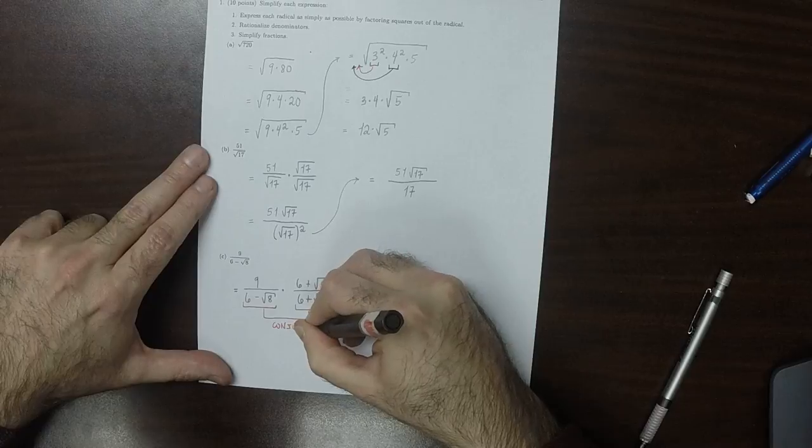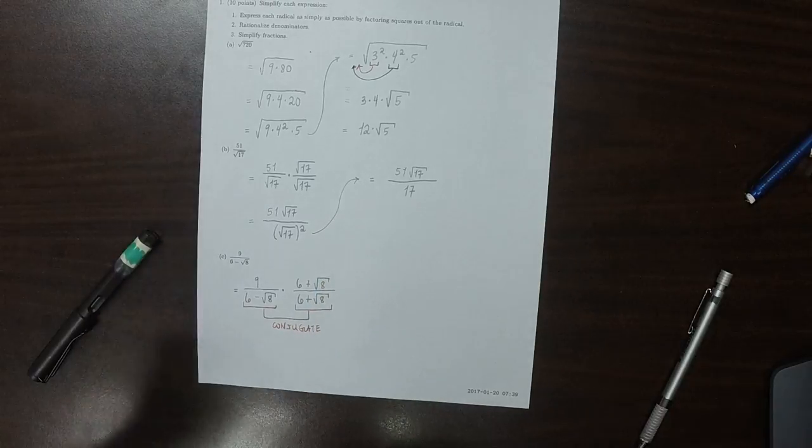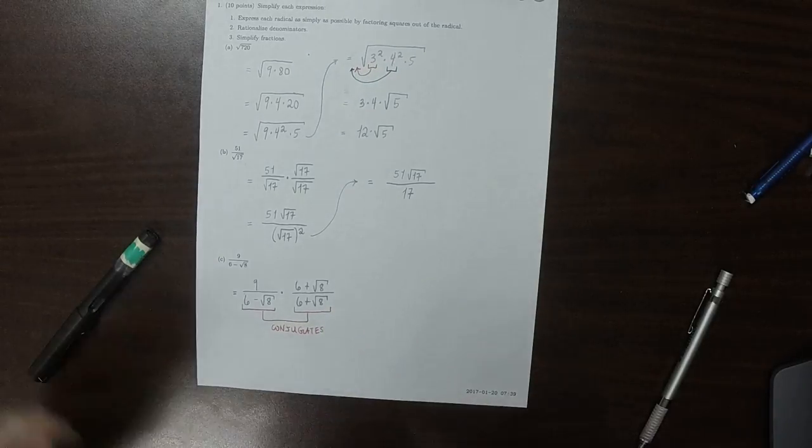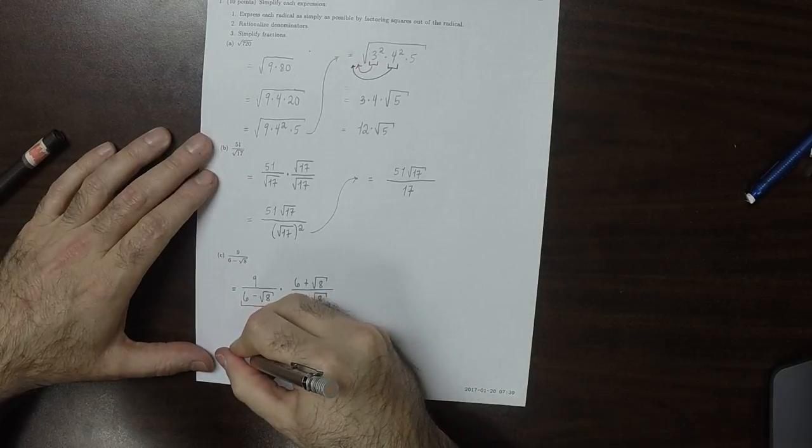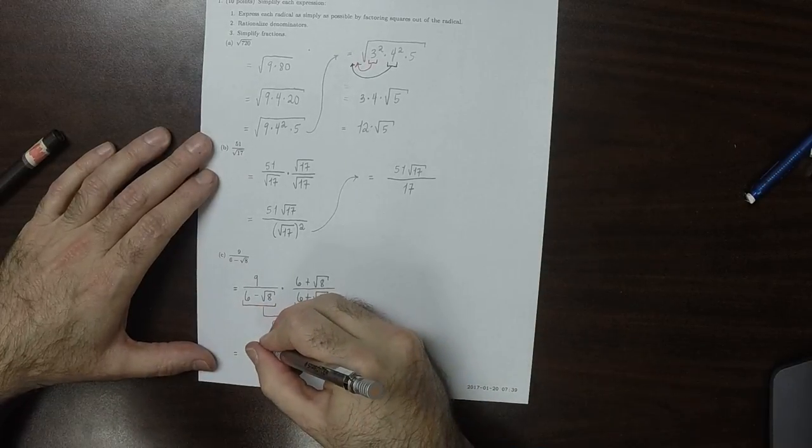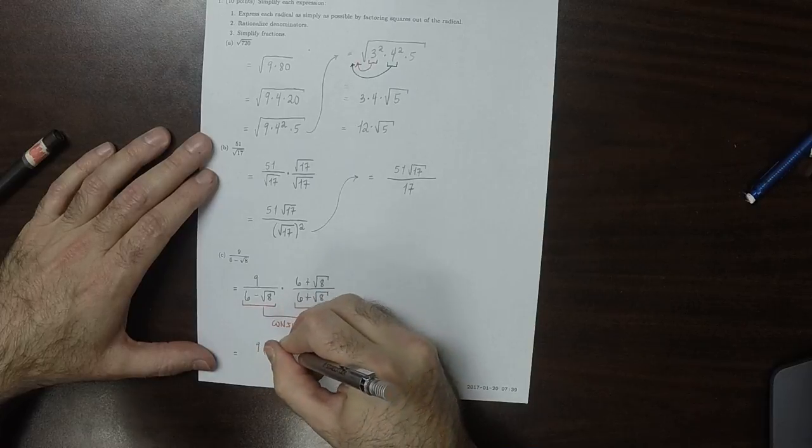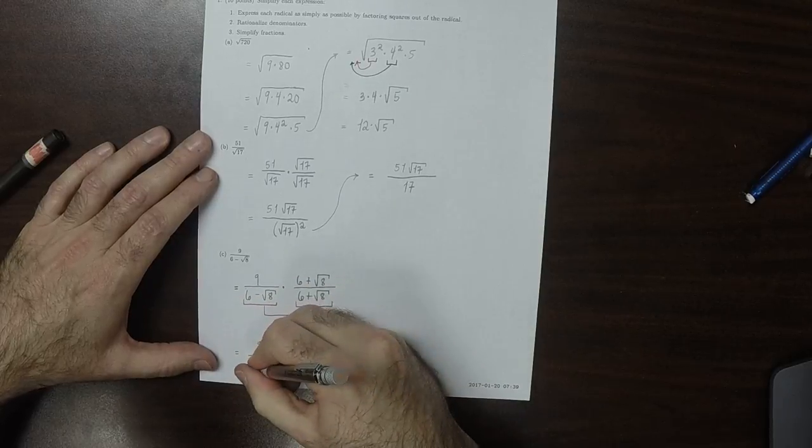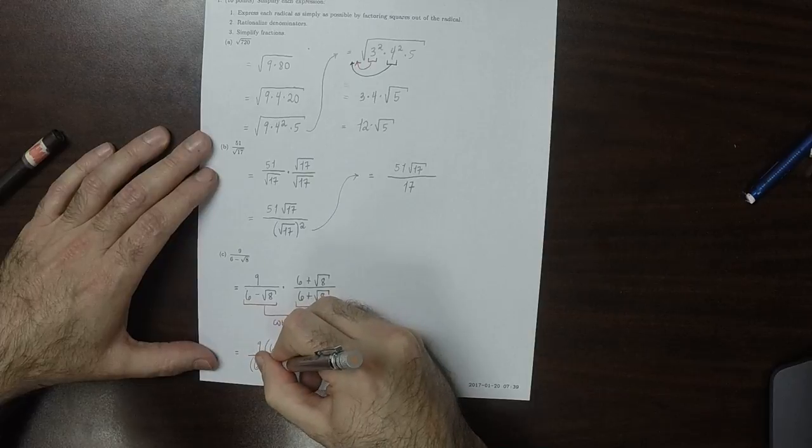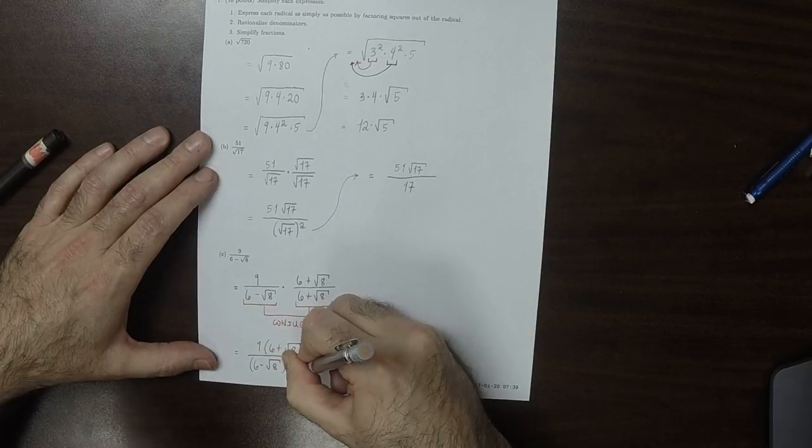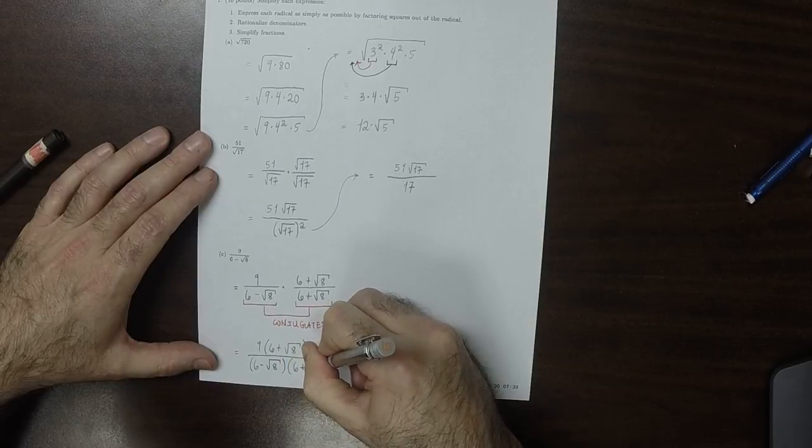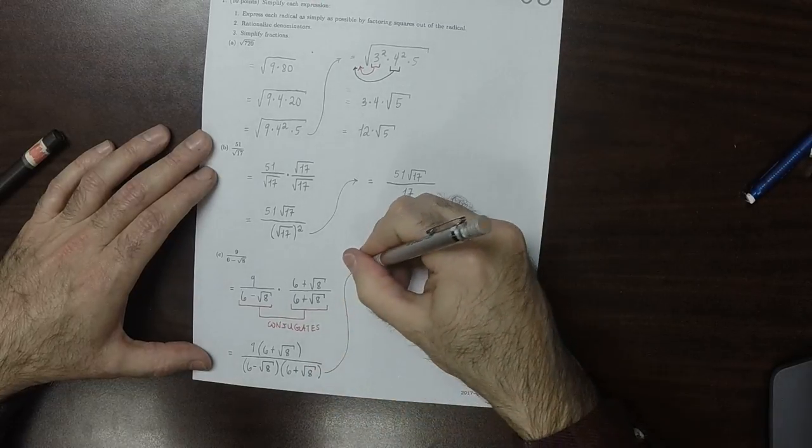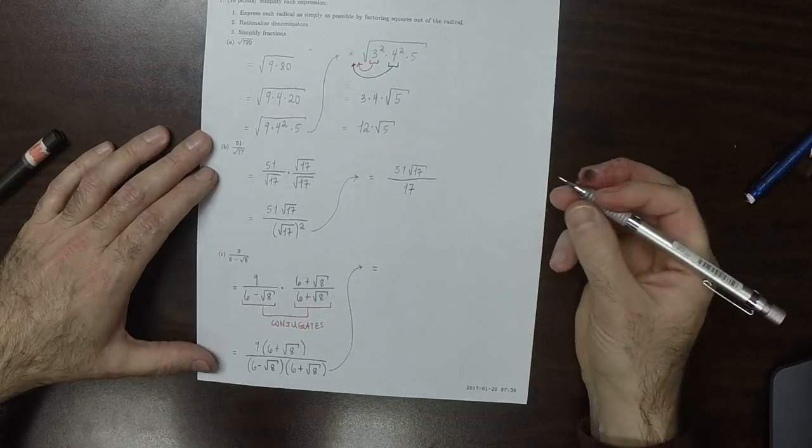These two are conjugates to each other. So, carrying this out, in the numerator, we would have 9 multiplied by 6 plus square root 8, divide by 6 minus square root of 8 multiplied by 6 plus square root of 8. This is the product of conjugates. We know that the product of conjugates becomes the difference of squares.